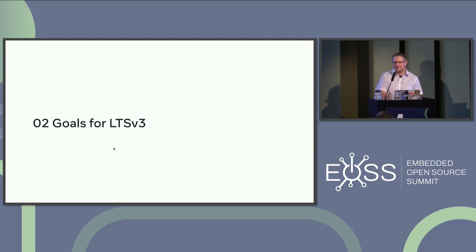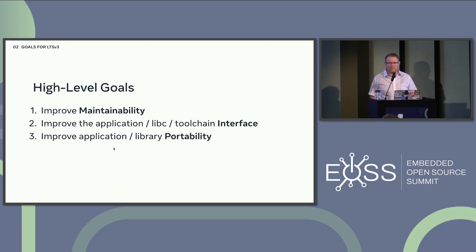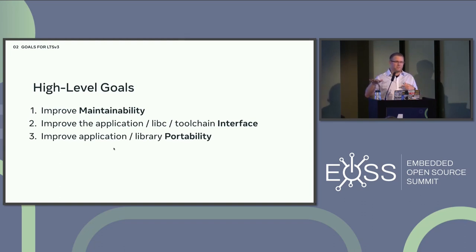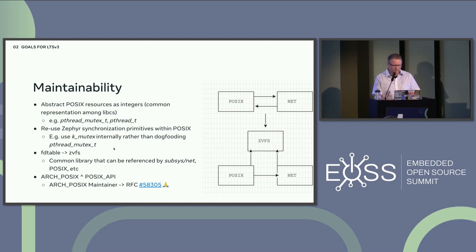Our goals for LTS v3 with POSIX — originally based on an RFC and discussed at the January architecture meeting — were a mishmash of tickets. At a high level: maintain it better, improve the interface for applications and the implementation, and improve portability. Those are the main goals.